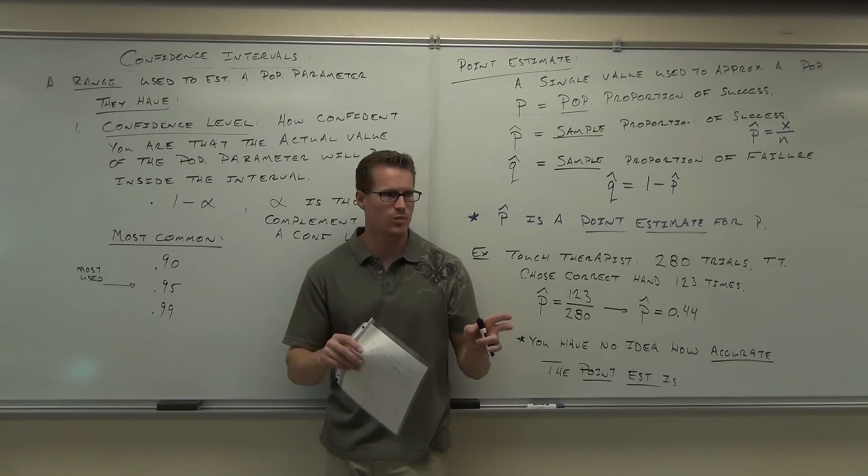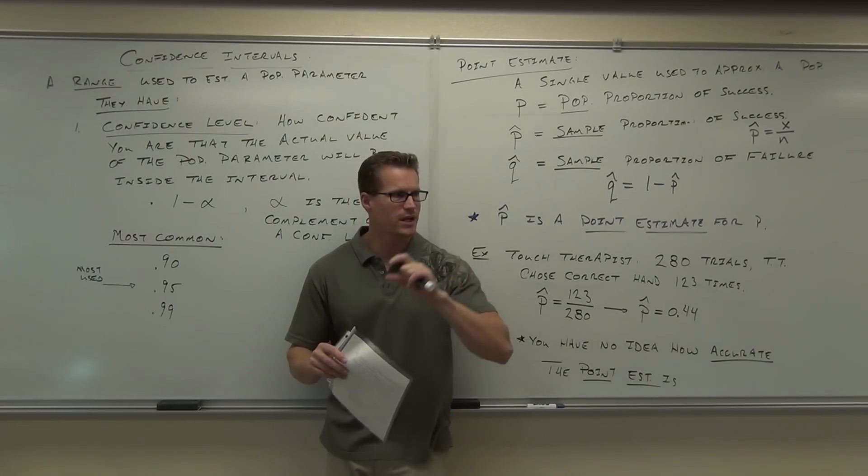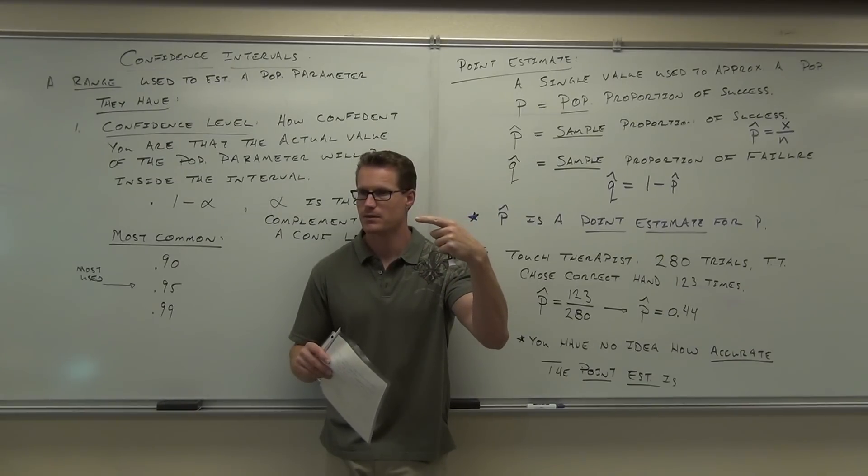But let's say it's 40% of the nation is approving of the president's job right now. Well, they didn't ask you, but it was a sample. Also, that's the point estimate they're giving you. Notice how they're giving you one value to represent all of the population. It's not a range of numbers.